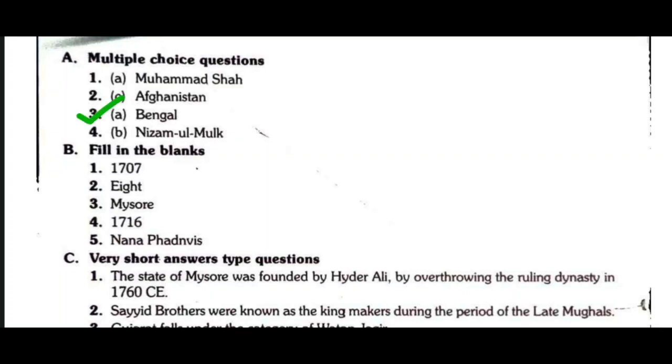Question number three: This was the first state to gain independence from the Mughals — that is Bengal, option A. He was the founder of Hyderabad — Nizam ul-Mulk, option B.